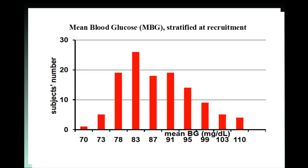On the ordinate, subject number out of 120 recruited adults in each stratum. On the abscissa, mean blood glucose (MBG) stratified in 10 strata (columns). Each stratum (column) contains people who are similar in MBG and differ in MBG from other strata.